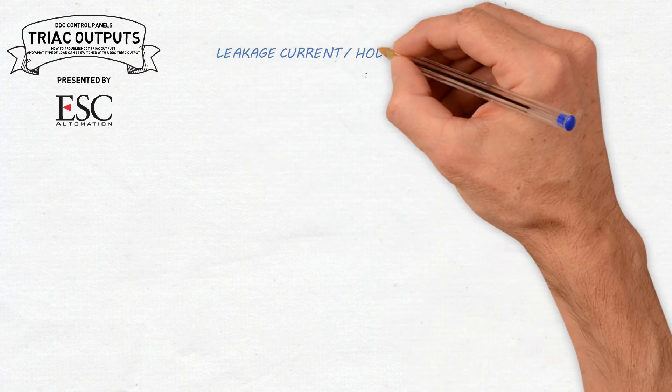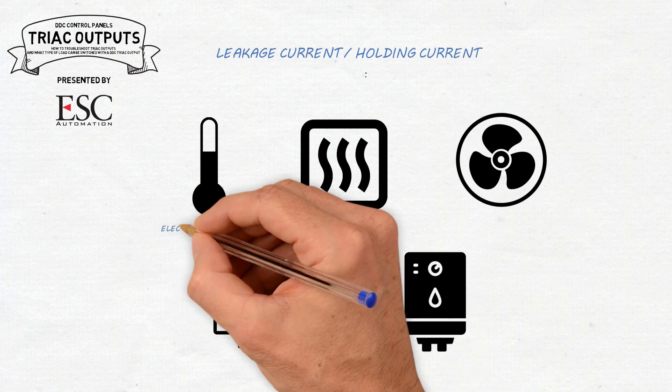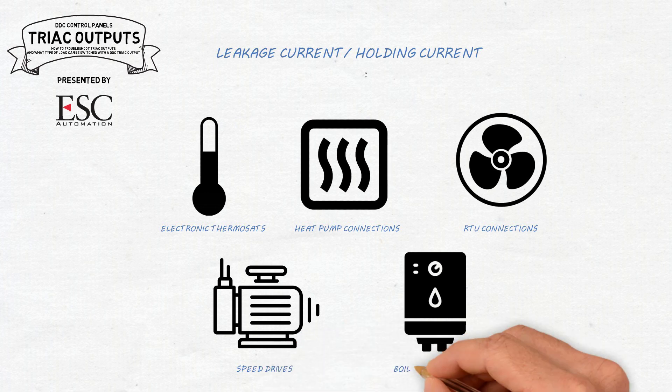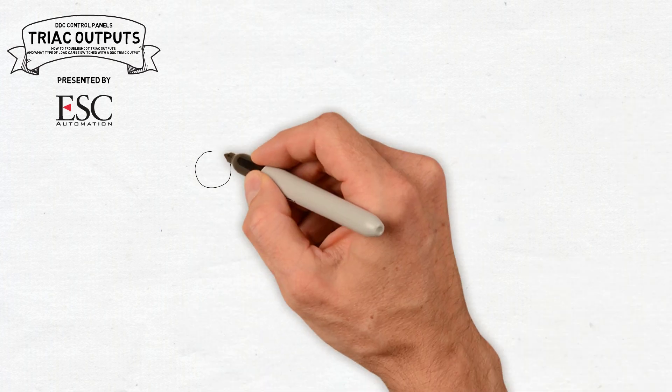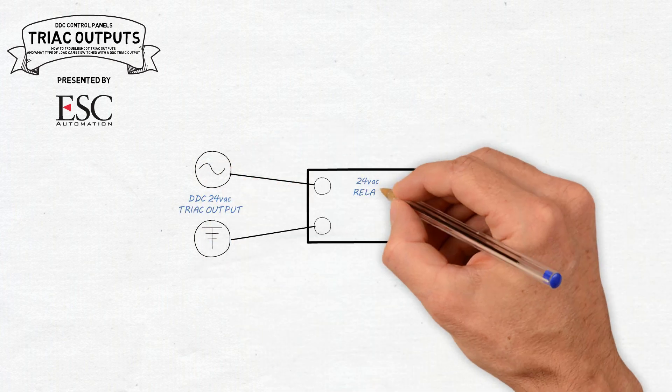Because of the leakage current, sometimes called holding current, triacs should not be used to switch electronic devices such as electronic thermostats, some heat pump connections, some RTU connections, speed drives, boiler electronics, or anything that runs on low current. A relay with a dry contact should be put in place to avoid this problem when switching electronic devices.